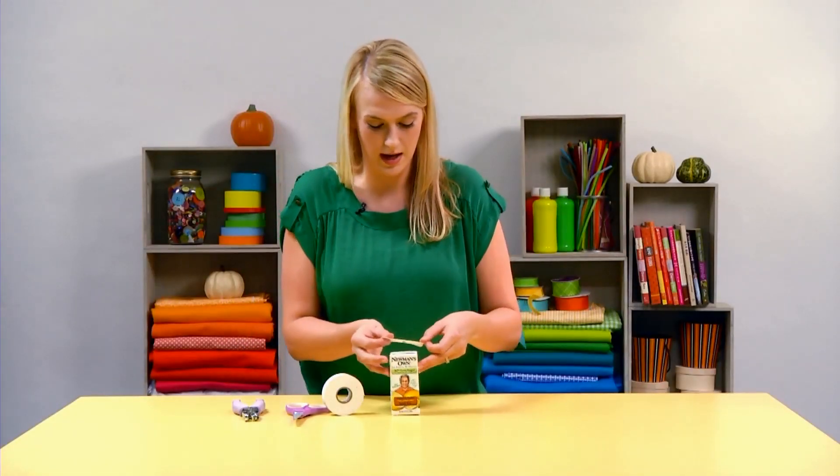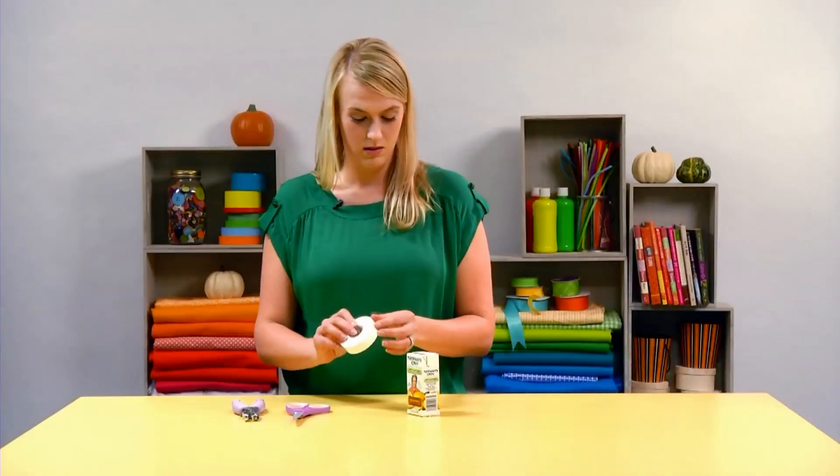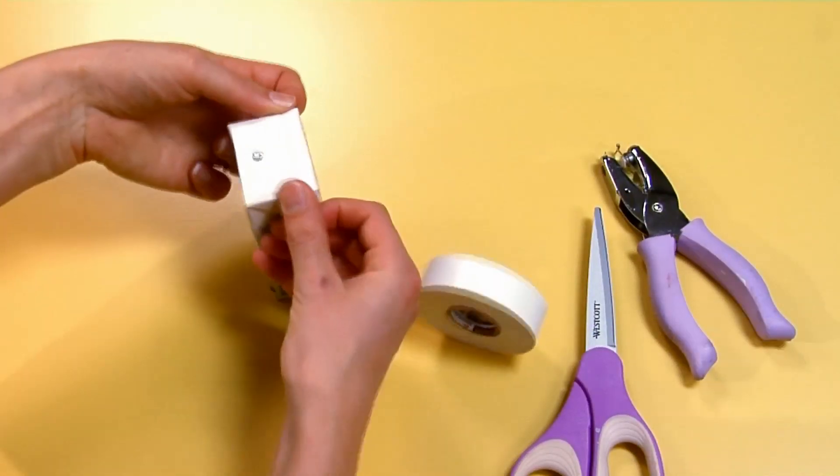Then line it up on top, and this is so that your child can put their straw into the juice box with ease. Then take another strip of tape and cover the rest of the top.